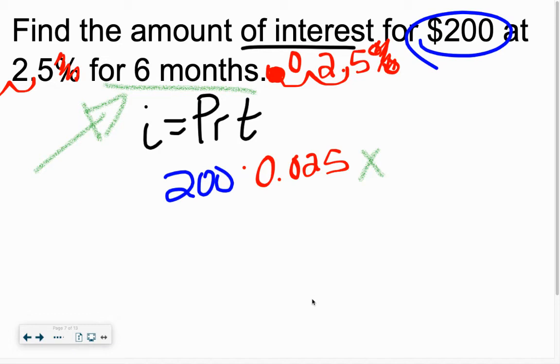So whenever it doesn't give it to you in years, remind yourself, how many months are in a year? 12 months. So since we started with six, make it a fraction. Six over 12. Cross your fingers, hope it makes a nice decimal. And it does. That gives you 0.5. When it doesn't, I can show you a way to make that work, how we can enter it correctly into our calculator. But this one came out nice.